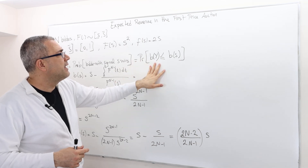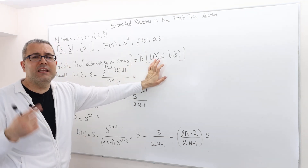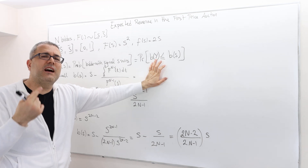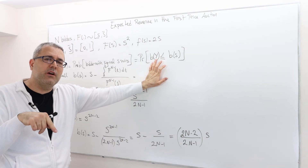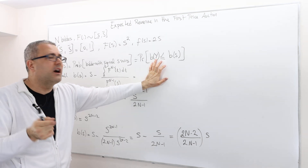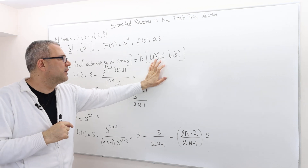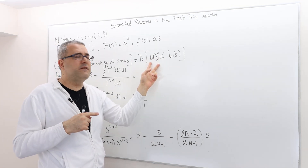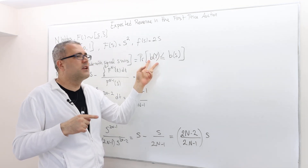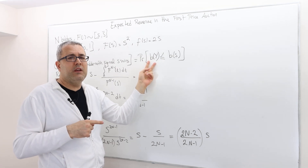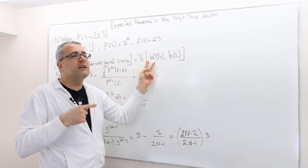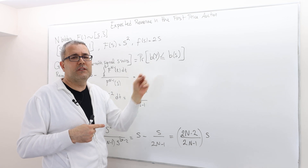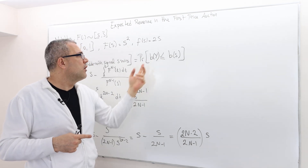So g(s) is the probability that the second highest valuation bidder's bid b(y) is less than or equal to b(s). Remember, y is the second highest valuation — I defined it in the previous lecture. The second highest valuation guy is going to bid b(y), and that should be less than or equal to b(s).